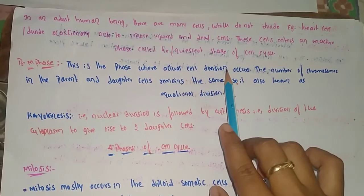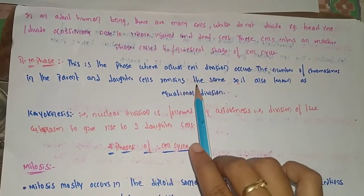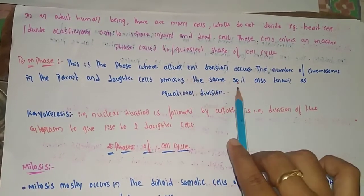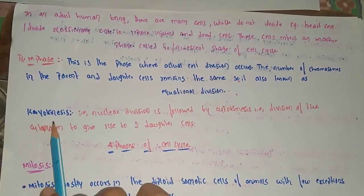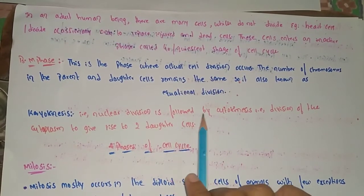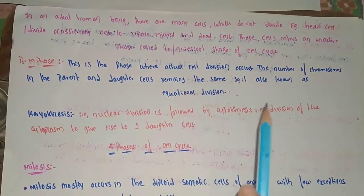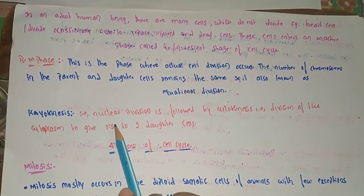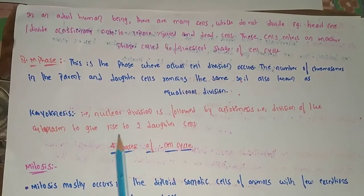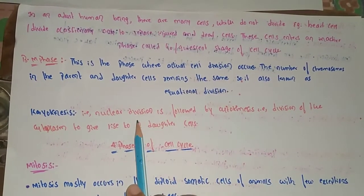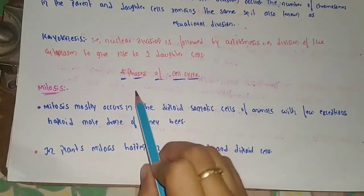M phase, or mitosis phase, is where actual cell division occurs. The number of chromosomes in the parent and daughter cells remains the same, so it is known as equational division. Nuclear division is followed by cytokinesis — the division of the cytoplasm — which gives rise to two daughter cells.